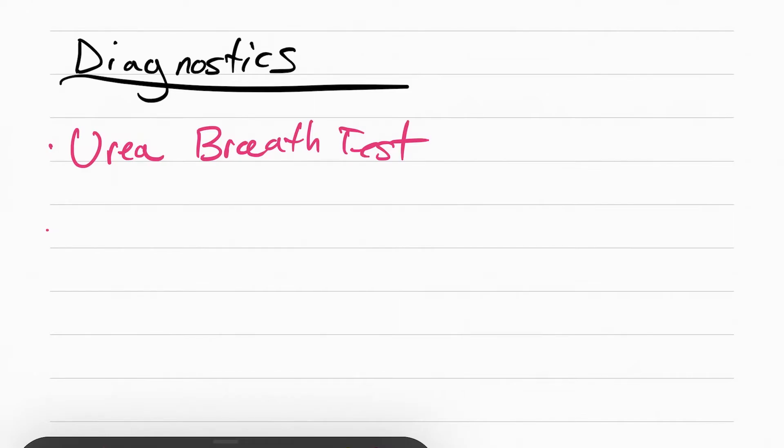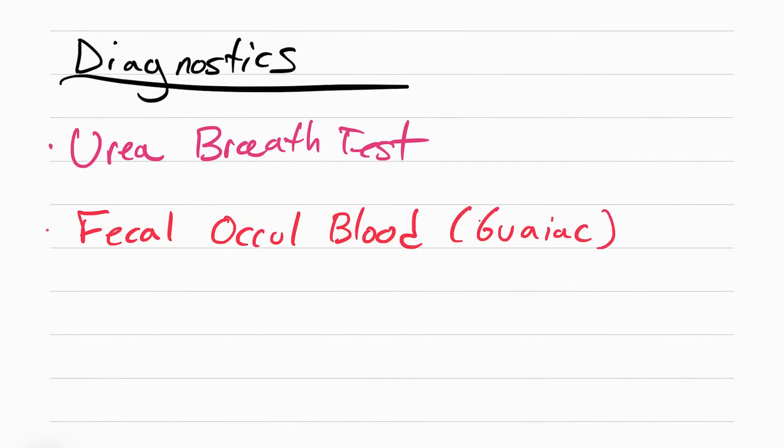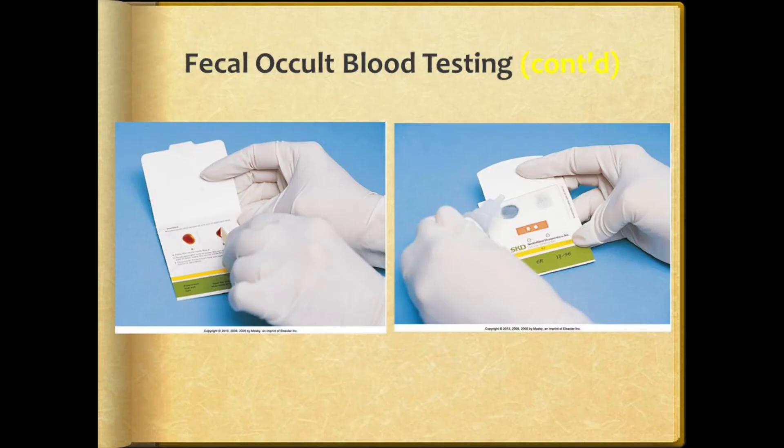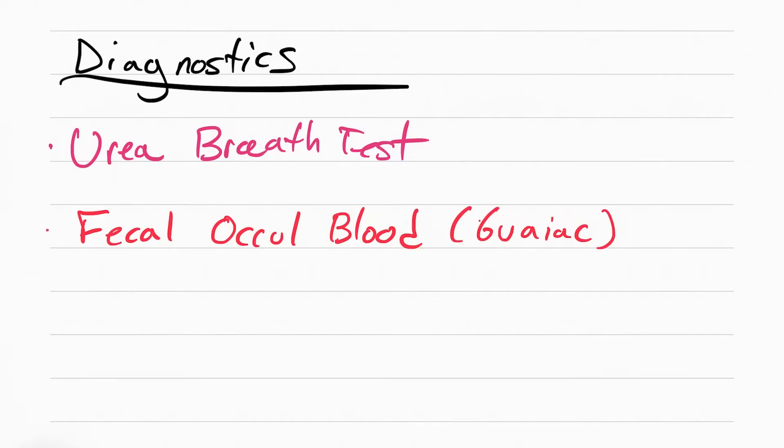How they check for GI bleed is something called a fecal occult blood test, the other name being a guaiac test. You'll take a stool sample from two different areas and pour special solution on it. If it turns blue, it means there's blood in the stool. If there is blood in the stool, they'll have to either do an endoscopy or a colonoscopy to see what's bleeding.